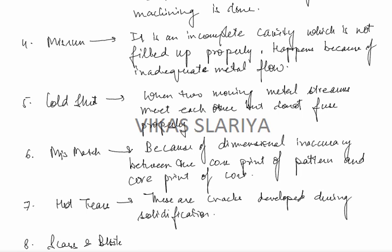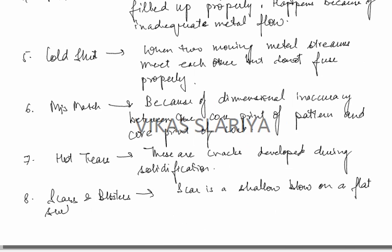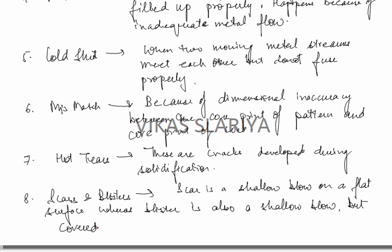Scars and blisters: a scar is a shallow blob on a flat surface, whereas a blister is also a shallow blob but covered by a metal surface. These are the major casting defects.